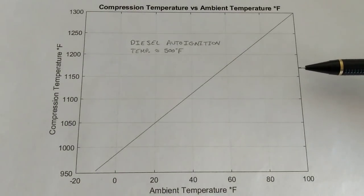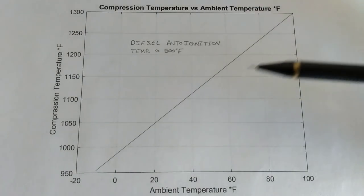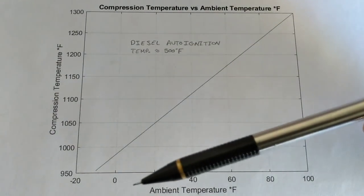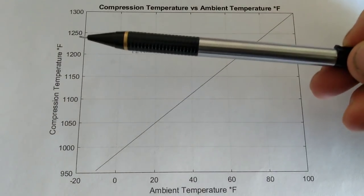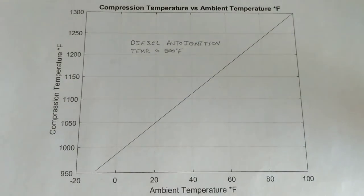Okay, so using those isentropic compression equations, and using a compression ratio of 17.5 to 1, as is applicable for the 7.3 Power Stroke, I ultimately ended up creating this nice graph that you see here that plots the ambient air temperature in degrees Fahrenheit, and the resulting temperature we get after the compression has occurred inside of the cylinder.